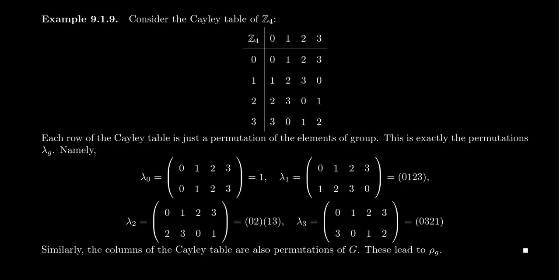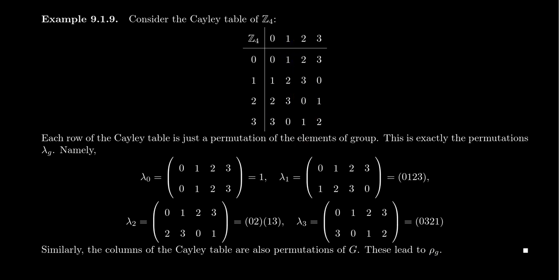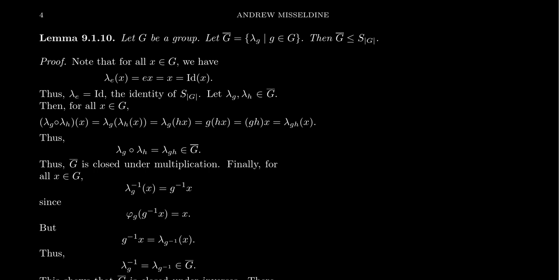With the right representation ρ_g, you're essentially looking at the columns of the table, but you have to take inverses — a subtlety for later. Now for Lemma 2: let G be a group and define G-bar as the set of all left translation maps. I claim G-bar is a subgroup of S_G — the symmetric group on the set G.